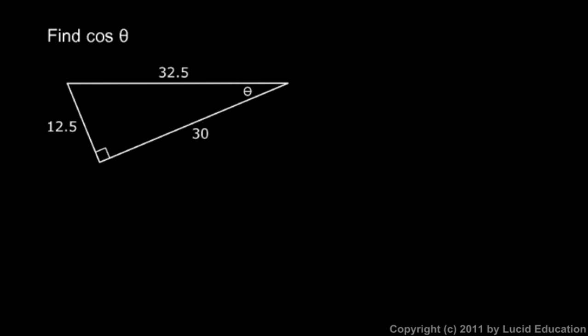Another example: here we're told to find the cosine of theta. Again, the orientation of the triangle doesn't matter. What matters is that you remember the cosine of the angle is the length of the adjacent side divided by the length of the hypotenuse. So here's angle theta. Which side is adjacent to theta? Is it this one or is it this one?